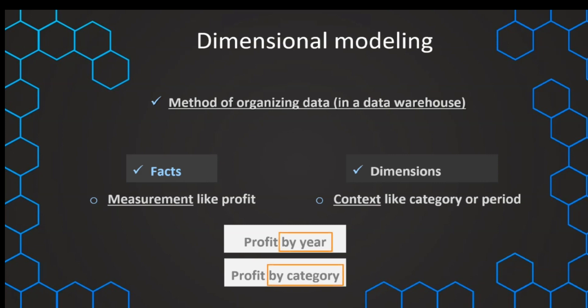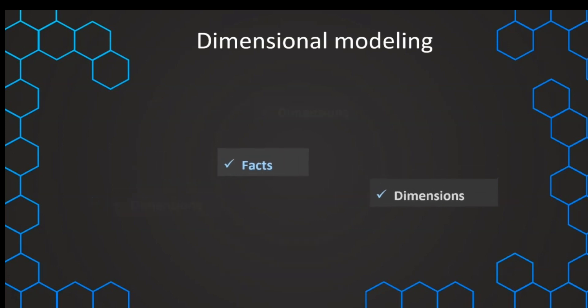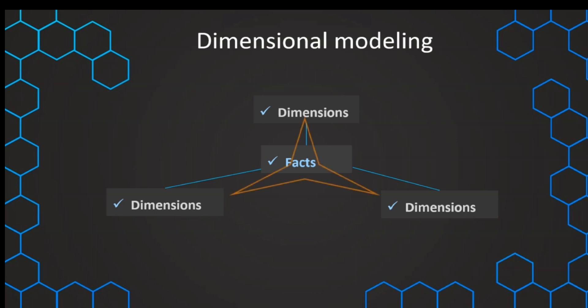You see that this keyword 'by' is usually indicating that the year or the category is a dimension. And now this fact is usually in the middle, and we have multiple dimensions clustered around this fact. We can use all of these different dimensions to analyze our data and the measurements in our fact table. And because of this visual appearance of a star, we also call this method or this alignment a star schema. And later on, we'll dive a little bit deeper into what a star schema is and also what some alternatives are.